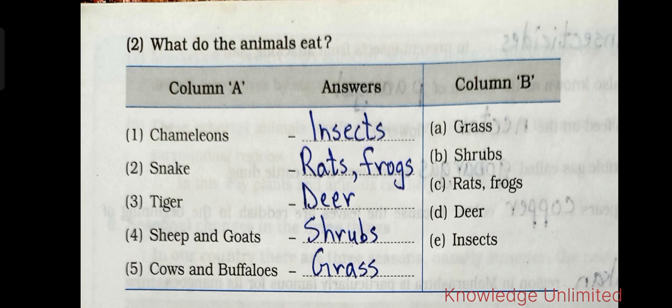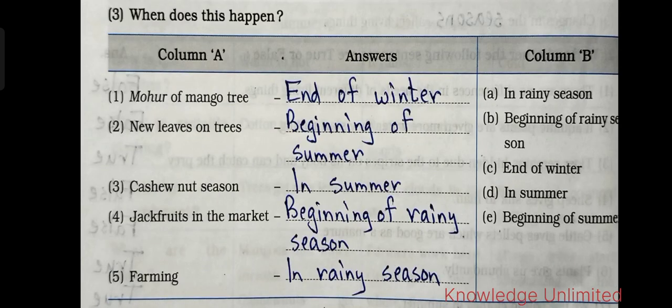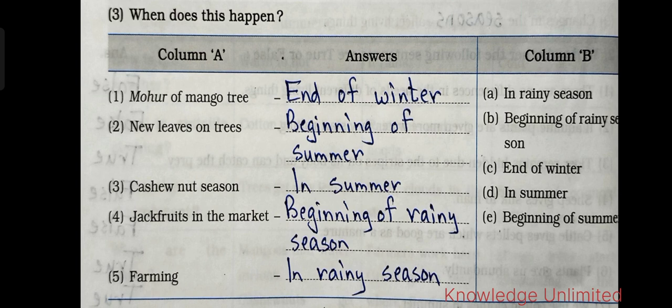Cows and buffaloes eat grass. Next: when does this happen? Moher of mango tree — end of winter. New leaves on trees — beginning of summer. Cashew nut season — in summer. Jackfruits in the market — beginning of rainy season. Farming — in rainy season.